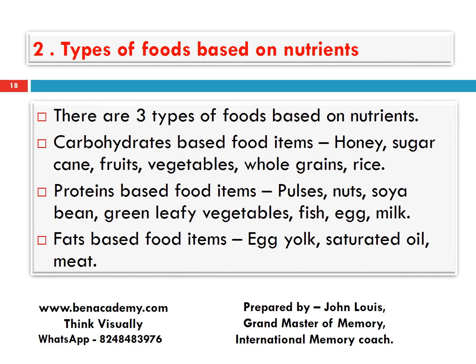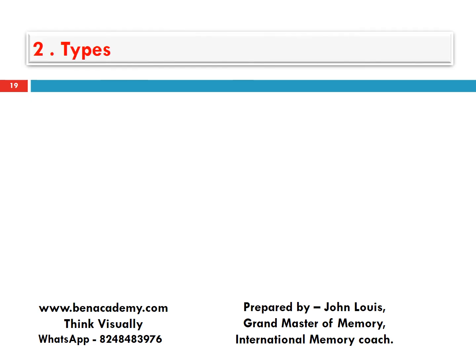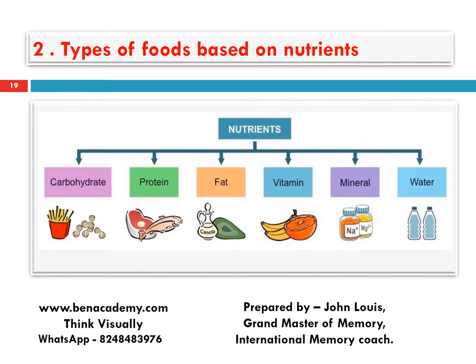Convert everything into a picture and connect the picture — associate the picture — that will help you to remember much better. Let us see here. First, what are the various nutrients in our food? Carbohydrates, proteins, fats, vitamins, minerals, and water. We are taking only the first three here — carbohydrates, protein, and fat.